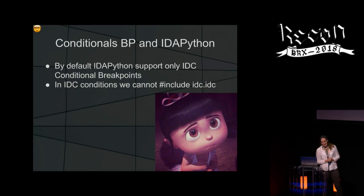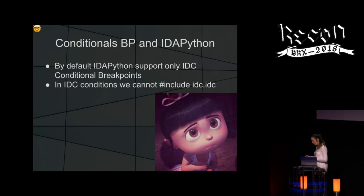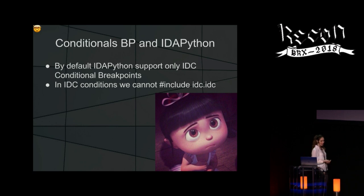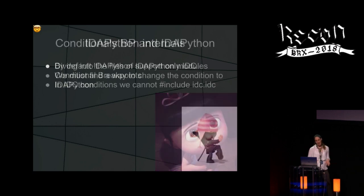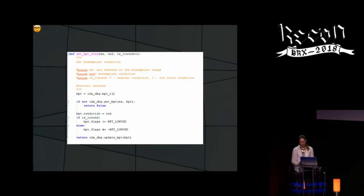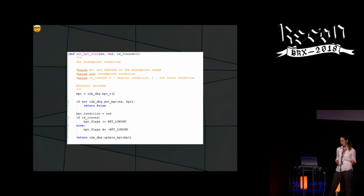But I found a problem: conditional breakpoints in IDA Python only support IDC conditions. In a conditional breakpoint you can include the idc.idc file which contains most IDC functionality, but I couldn't really do what I wanted with IDC as a condition. So I dove into IDA Python modules and looked for a way to change it. Looking at set_bpt_condition, there is no way to change the language — it's hardcoded to IDC. Then I looked at IDC files and found the ELANG attribute in the breakpoint class.